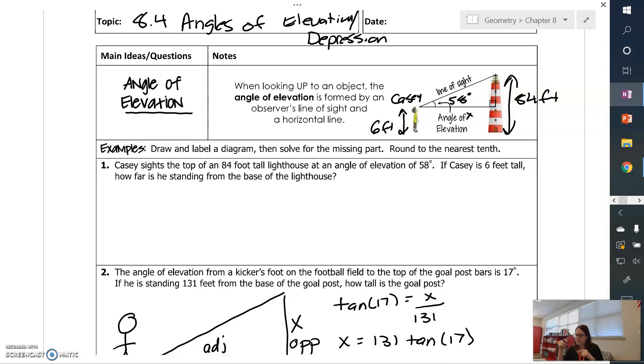So check this out. Because Casey is 6 feet tall, the bottom of our triangle, which I'm going to redraw over here, is 6 feet above the ground. So that means the vertical side of our triangle is going to be 84 feet minus 6 feet. So watch out for things like that. We can play that kind of a game. So we have 78 feet there.